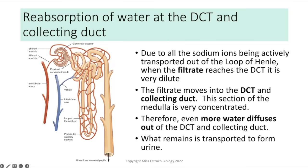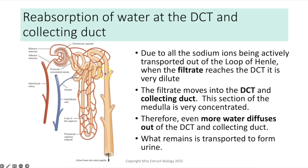At the distal convoluted tubule and collecting duct — and note that in the exam you must write out the full terms, not just PCT and DCT — due to all the sodium ions actively transported out of the ascending limb, by the time the filtrate reaches the DCT it is very dilute, especially compared to the water potential of the medulla. As the filtrate moves through the DCT and collecting ducts, that concentrated solution or very negative water potential causes even more water to move out by osmosis. Whatever filtrate remains in the collecting duct goes on to form urine.